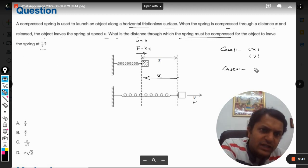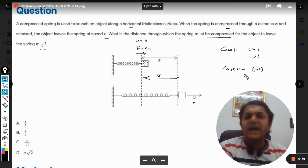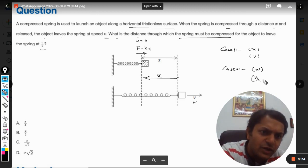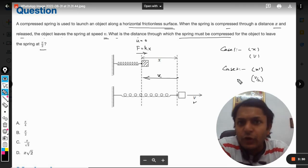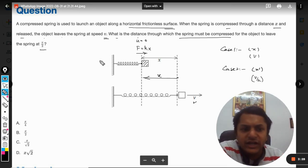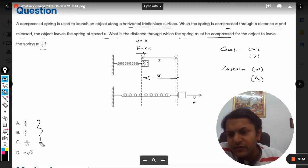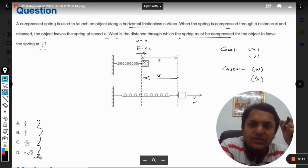So now it is given in case number two: what should be the x dash, the new compression, so as to have the velocity of v/2 when the body separates itself from the spring? There are two equations now, two cases, and the answers are in terms of x.